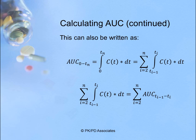We can also write this as the AUC from zero to time N is the integral from zero to time N of C(T) times dT, which was the original definition. Or it can also be the sum from i equals two to N of these smaller intervals. In effect, this integral is just the sum of all the AUCs put together. Each individual area for each two adjacent time points can be summed together, giving you the total area under the curve.